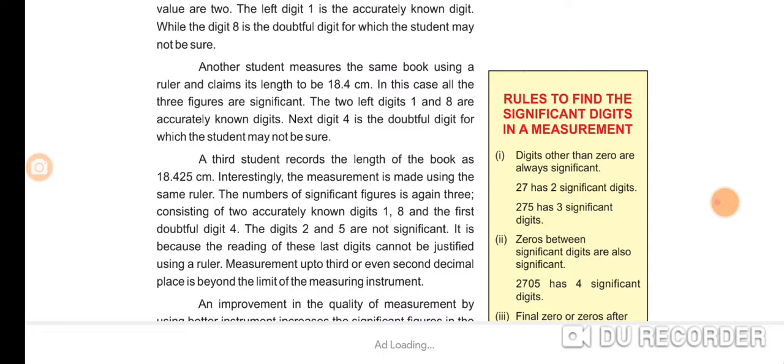A third student records the length of the book as 18.425 centimeters. Interestingly, the measurement is made using the same ruler. The number of significant figures is again three, consisting of two accurately known digits (1 and 8) and the first doubtful digit (4). The digits 2 and 5 are not significant because the reading of these last digits cannot be justified.